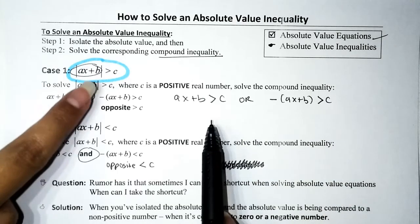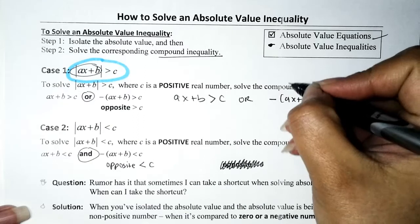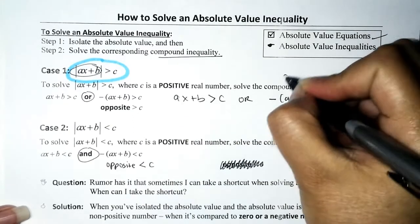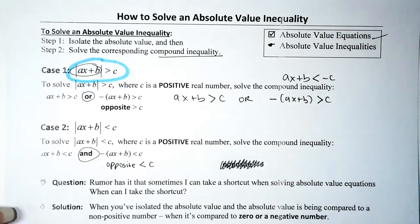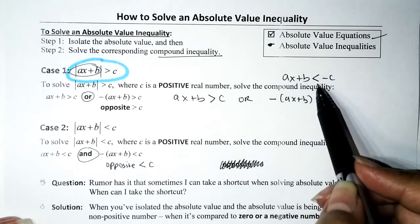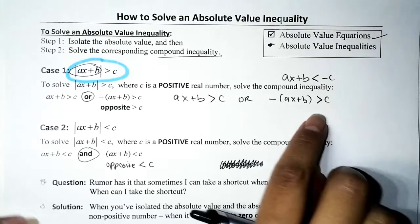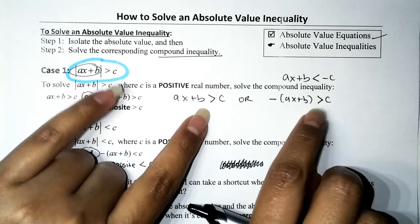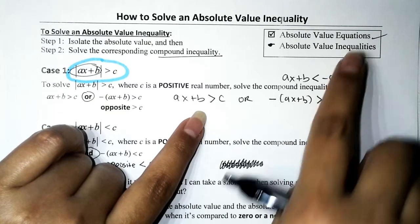Your book will say the same thing, but write the second one as 'ax + b is less than negative c.' That's the same thing, but as a student I would always get it wrong. Use the same strategy from the earlier section and you're good to go.